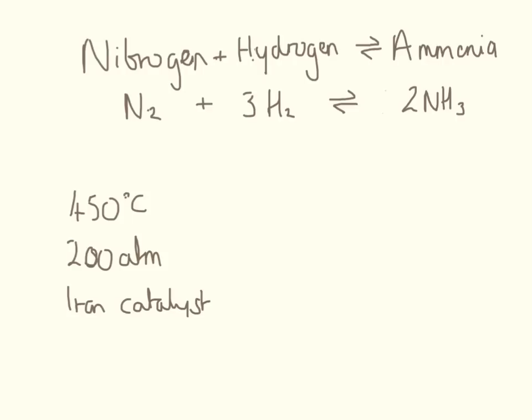So just to recap, the equation for ammonia production is nitrogen plus hydrogen. This here is a reversible reaction to produce ammonia. You need to remember the conditions, which are 450 degrees C, 200 atmospheres, and an iron catalyst.